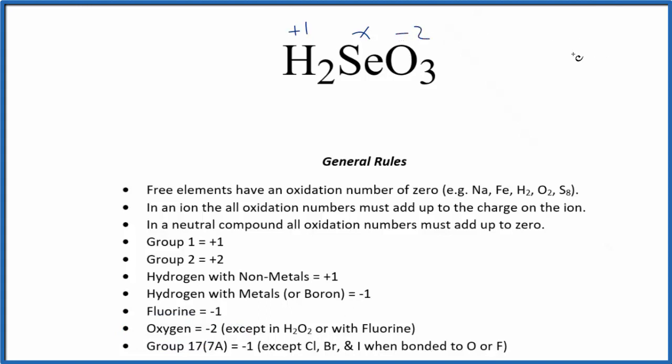All this is going to equal zero. We could probably figure it out just by looking at it, but let's set an equation up. We have plus one for each hydrogen, and we have two hydrogens. We don't know what the Se is. For the oxygen, we have negative two times three. All of that equals zero. So X, we have two minus six, so X minus four equals zero.